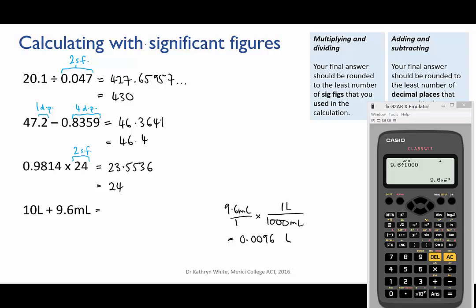So then we have 10 plus 0.0096, which gives us 10.0096. But it's an addition, so we're checking decimal places. Now the 10 litres has no decimal places, so our final answer must also be rounded to no decimal places, and that makes it 10 litres.